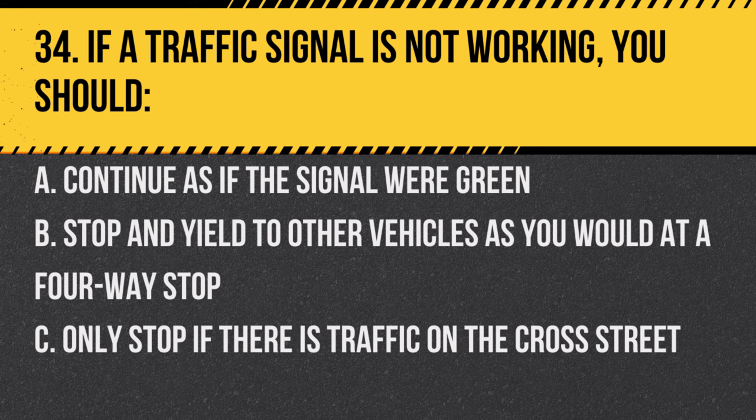Question 34. If a traffic signal is not working, you should: a. Continue as if the signal were green. b. Stop and yield to other vehicles as you would at a four-way stop. c. Only stop if there is traffic on the cross street. Answer: b. Stop and yield to other vehicles as you would at a four-way stop. This ensures safety and order at the intersection.